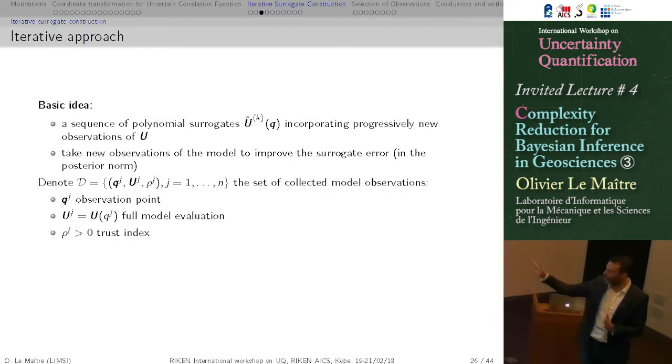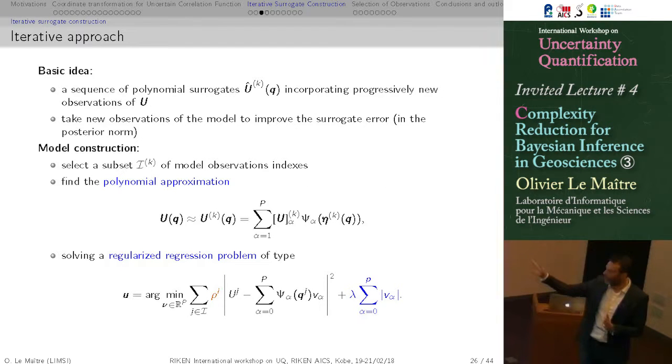So imagine that at some point in the algorithm, we have selected n of these triplets. So value of, sorry, location of the parameter, value of the parameter, prediction, exact model prediction, and some trust index value. What we do then is that using this set of triplets, we extract a subset, I will explain how later on, to construct the surrogate here.